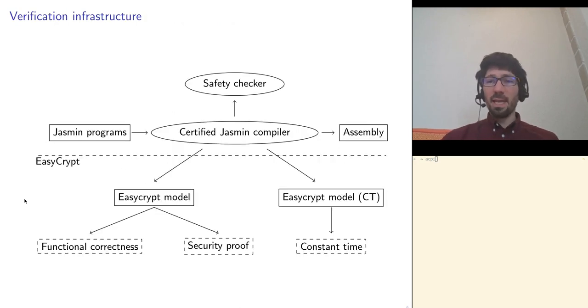So this was for the language, and around the language is a rich verification infrastructure. At the heart of this infrastructure is the compiler. It takes Jasmin source programs and produces corresponding assembly programs. This compiler is certified. Like the CompCert compiler, we have a Coq proof that the behaviors of the assembly program are the same as the behaviors of the source program. Therefore, this legitimates that we do formal reasoning at the source level.